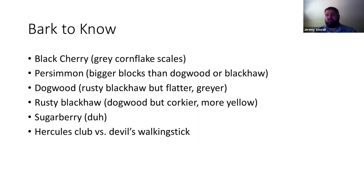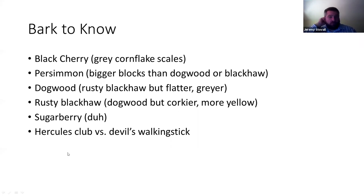Hercules club versus devil's walking stick on bark: Hercules club is gray with raised 3D pyramids and prickles sticking out, while devil's walking stick is tan with prickles clustered near the big leaf scars. On twigs: Hercules club has gray twigs with dark black or purple prickles; devil's walking stick has tan twigs with tan prickles.